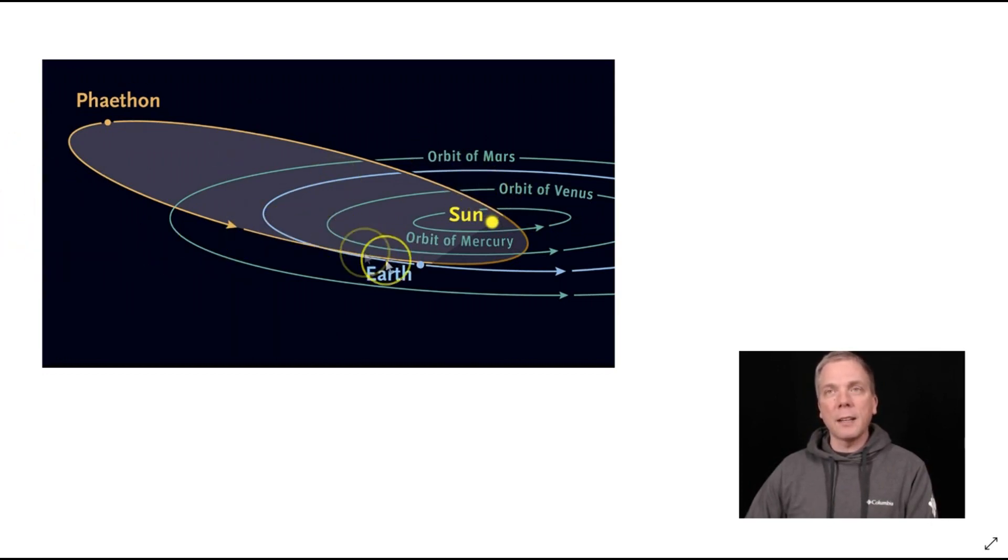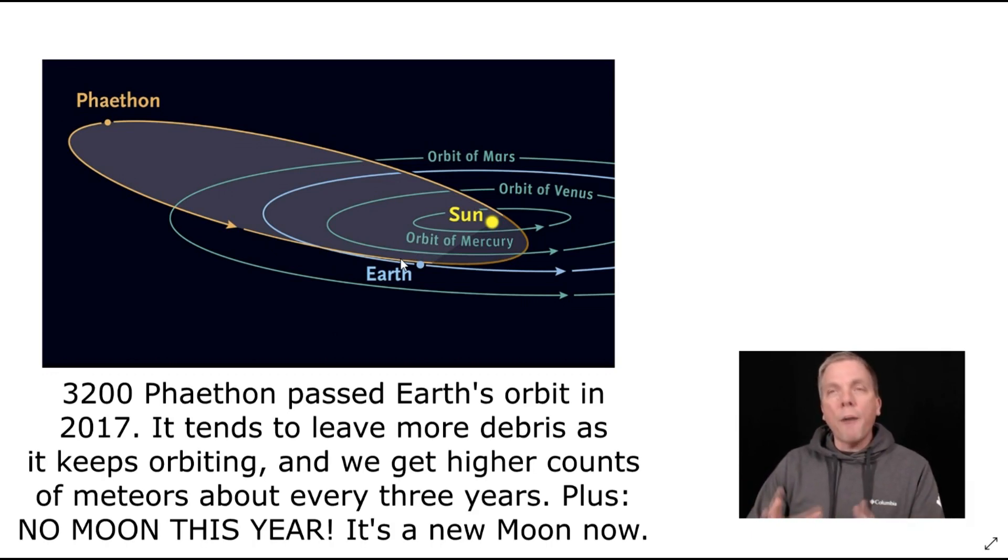And as it comes back around and leaves a lot of bits of dust and sand and whatever else off of the comet - as it gets cracked from getting so close to the Sun - it leaves all that in its orbit as it goes through our orbit. And then when we plow through that, we see meteors as they burn up in the atmosphere.